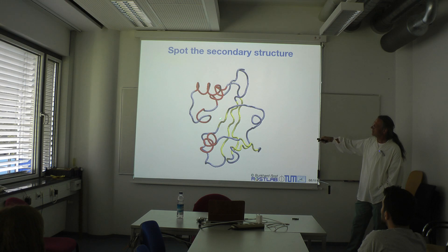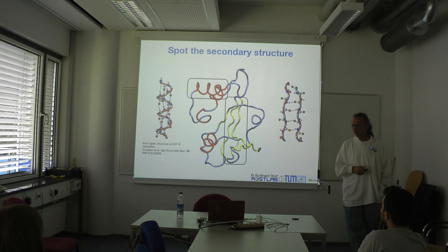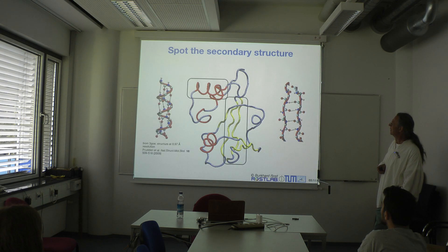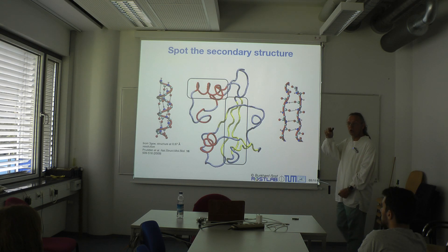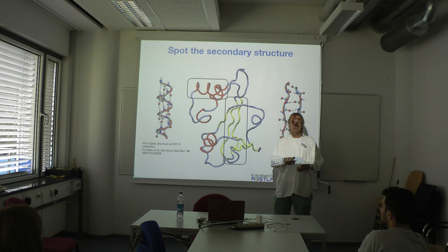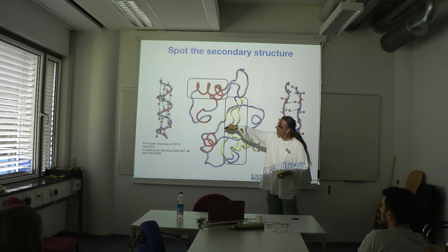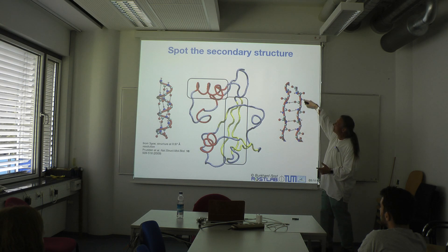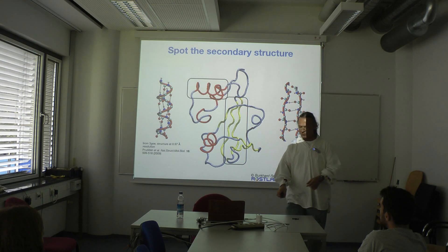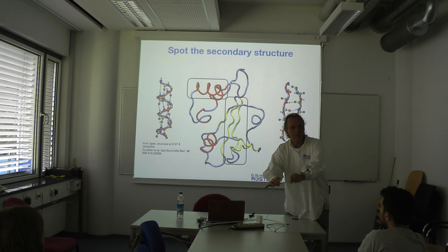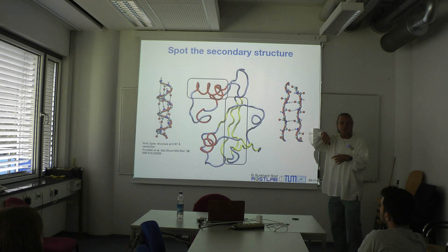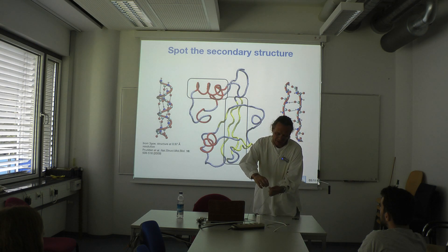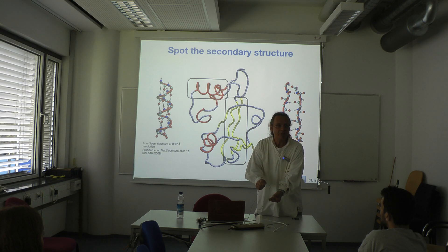Alpha helices are stabilized by local interactions — hydrogen bonds between residue i and i+4, relatively close in sequence. The beta strand is stabilized by something different: this is one chain, this is another chain, and they could come together from very far apart in sequence. So these two beta strands could be far apart in sequence but come together in structure. For the alpha helix, you form it by winding up things that are close but not directly adjacent in sequence.